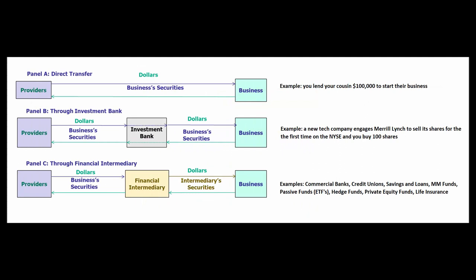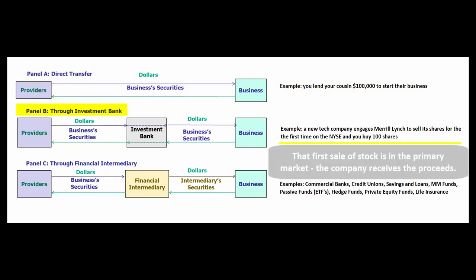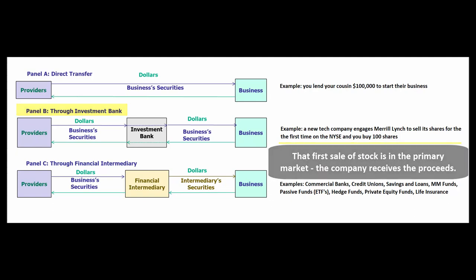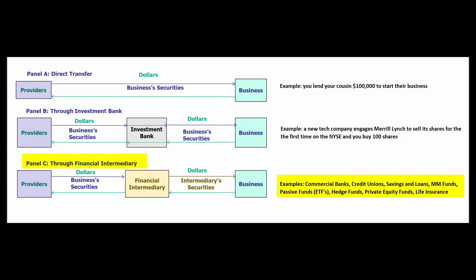How do dollars go from savers to spenders? You might lend your cousin a hundred thousand dollars directly to start their business, or your cousin might take their company public and sell shares through an investment banker like Goldman Sachs or Merrill Lynch. Or you could take your savings to a local commercial bank, which will take your money and lend it out to spenders.